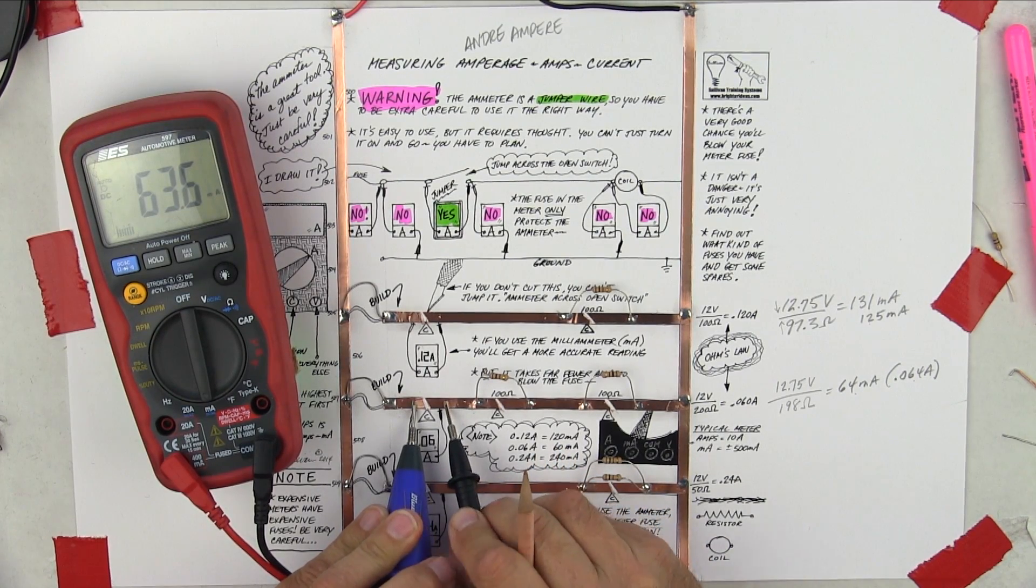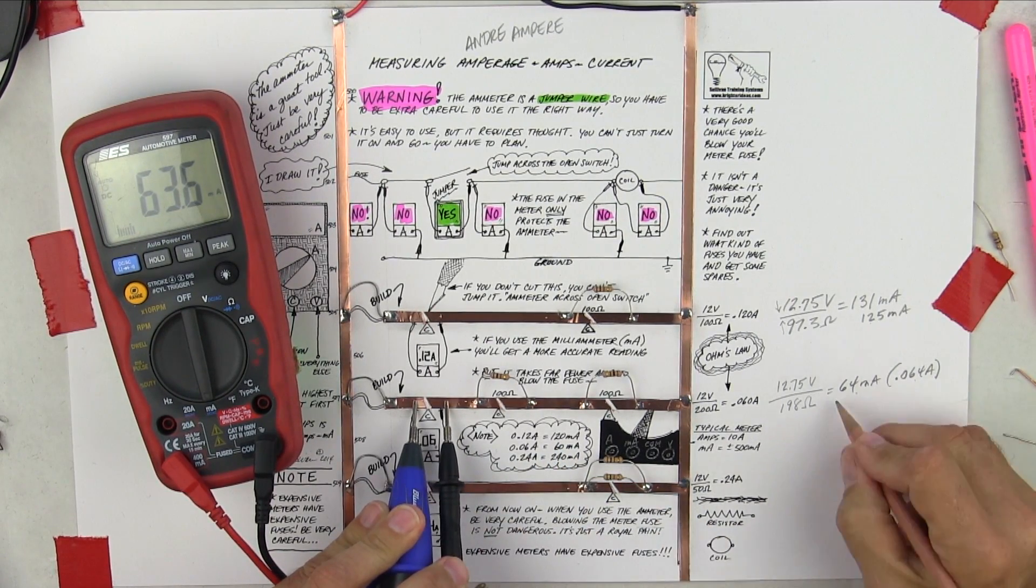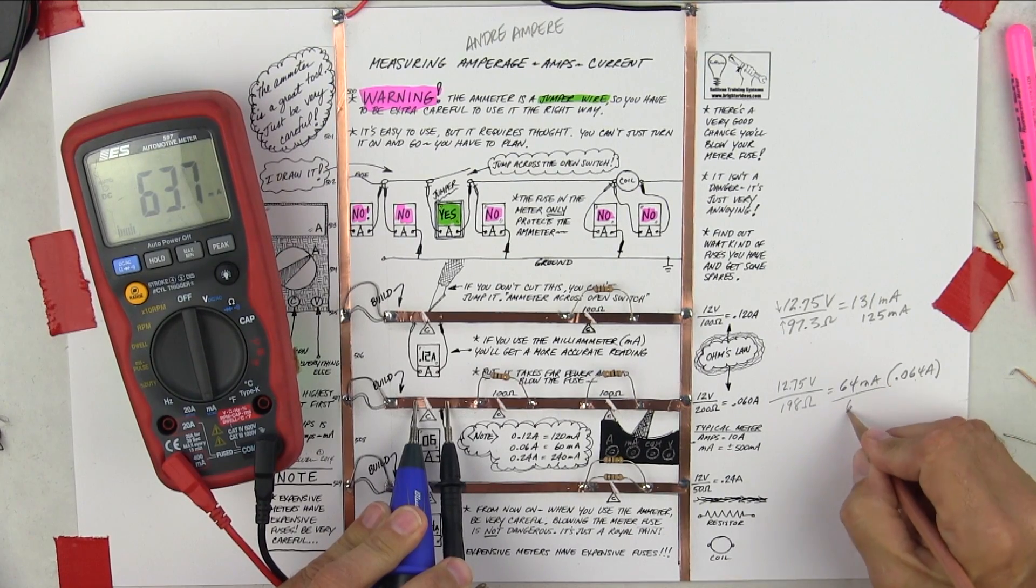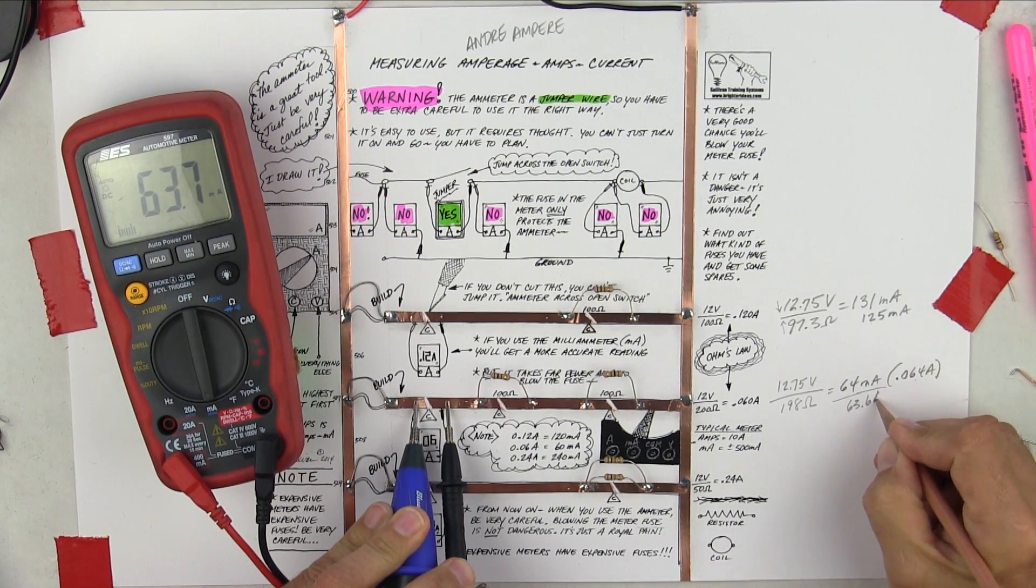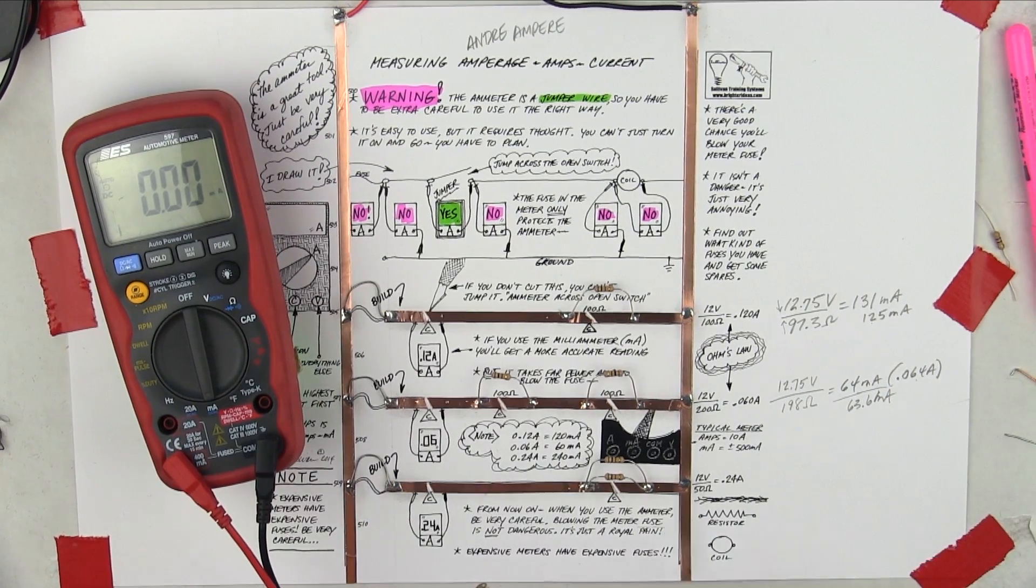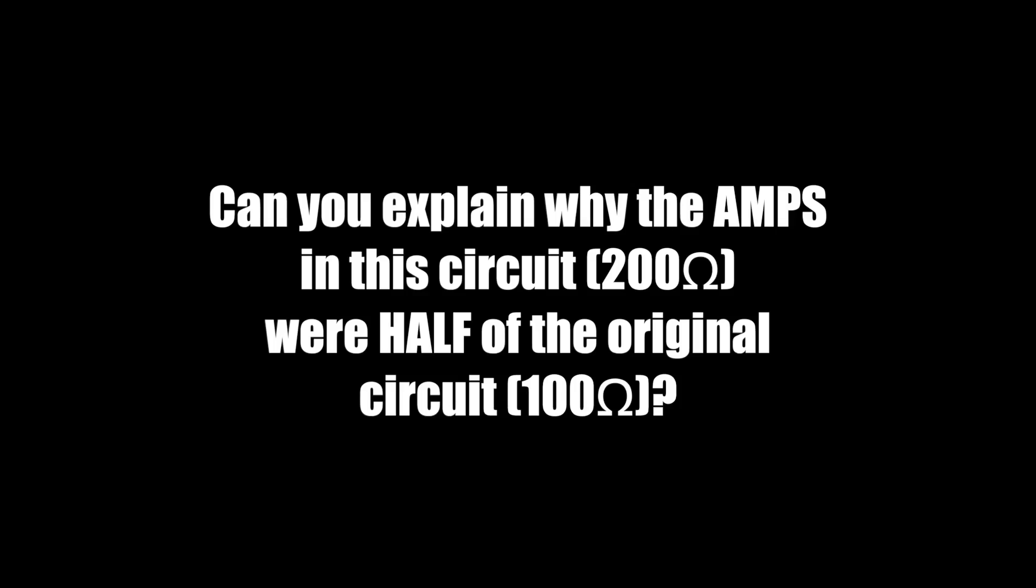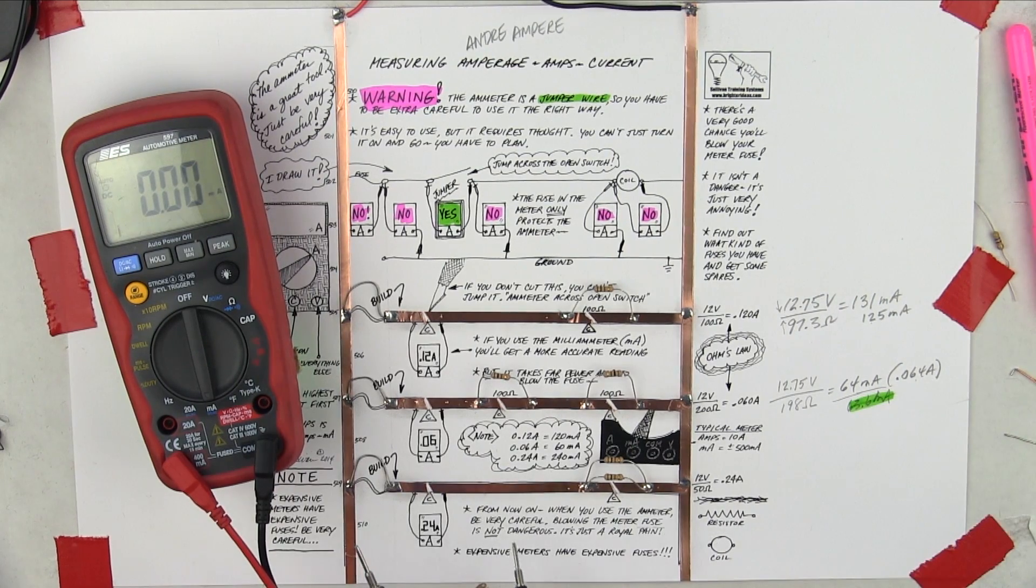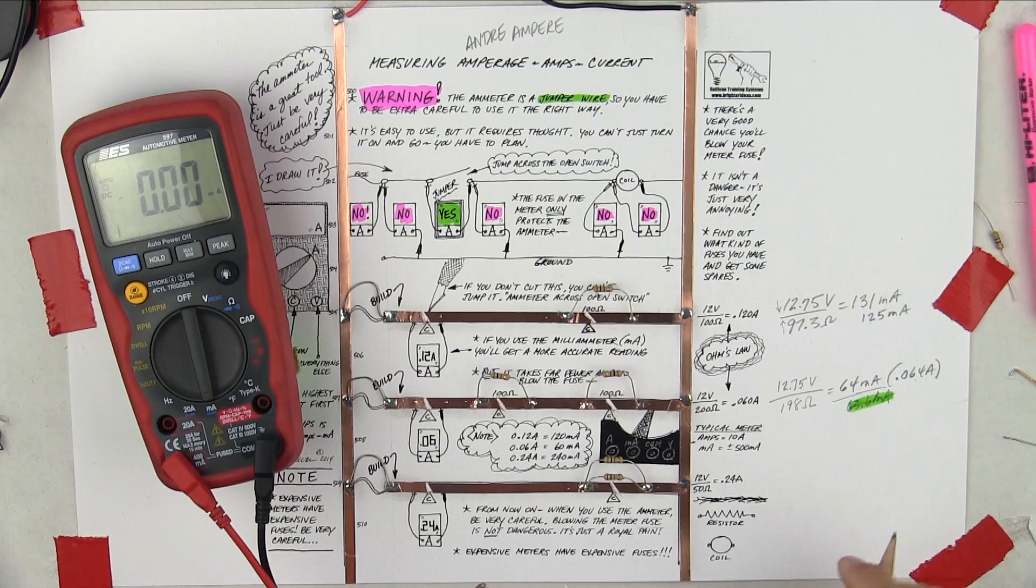Well, that's a little closer. 63.6. We calculated 64, so we get 63.6 milliamps. So that number is pretty good. That's a pretty good number there.